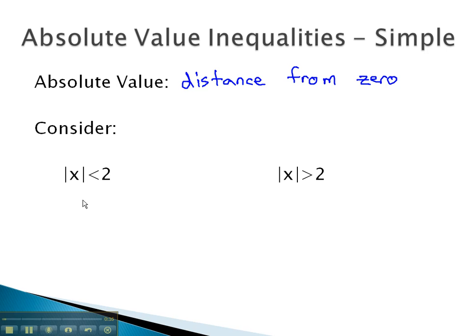Let's play with this idea of distance as we look at some examples. Consider the absolute value of x is less than 2. That means the distance from zero on this number line that's acceptable is anything less than 2. The obvious area is anything from zero to 2 would be a distance of less than 2.